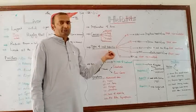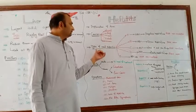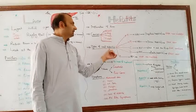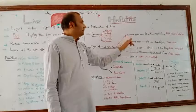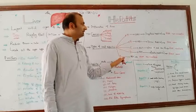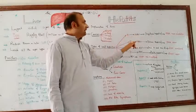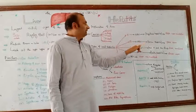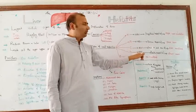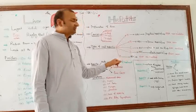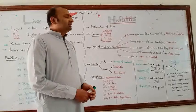Among all these causes, viral hepatitis is very important. There are different types: hepatitis A, B, C, D, and E, commonly abbreviated as HA, HB, HC, HD, and HE respectively.